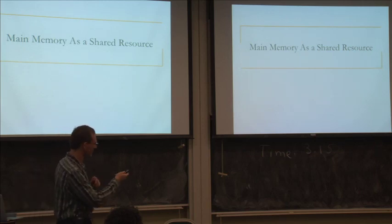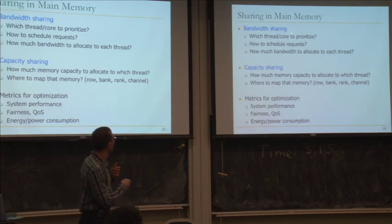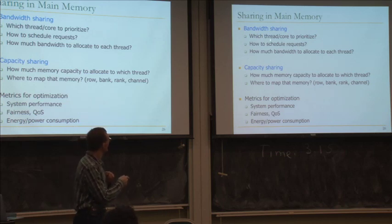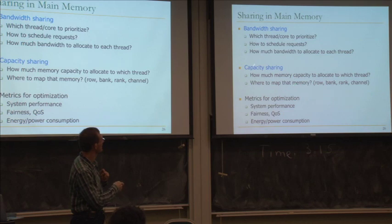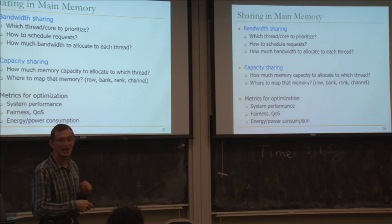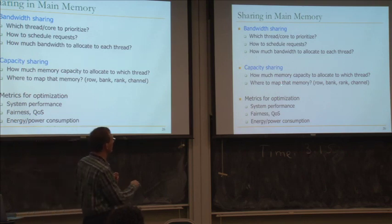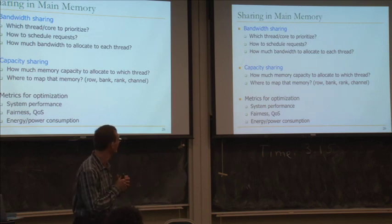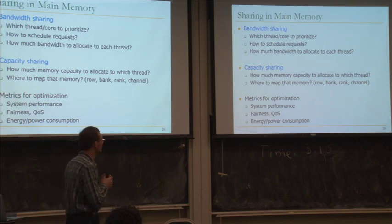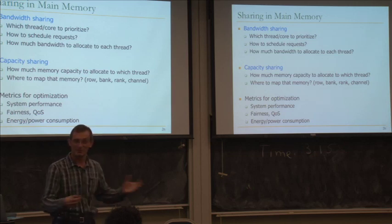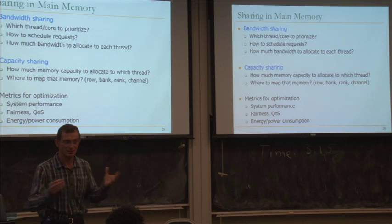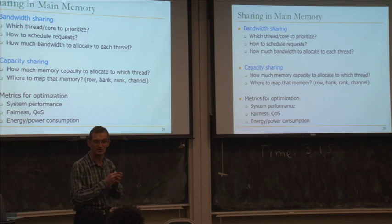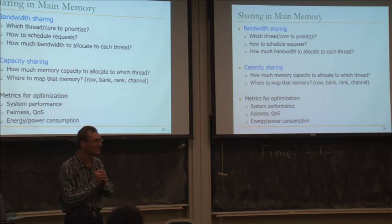Sharing in main memory occurs in two ways: bandwidth or time sharing, and capacity sharing. Questions include how much memory capacity to allocate to each thread and where to map that memory. Memory has a five-dimensional structure: row, column, bank, rank, and channel. Where you map a page matters - you can get more bank conflicts if all pages are mapped to one bank.